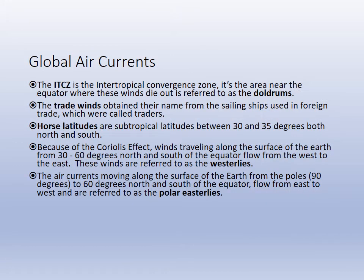Looking at the wind currents: the doldrums, or the intertropical convergence zone, have very little wind but a lot of precipitation. The trade winds, which got their names from sailing ships, blow in the subtropical zones. At 30 to 35 degrees latitude is the high pressure belt called the horse latitudes, where descending air means less wind. Ships stalled out there because they were wind-powered, so they had to throw heavy things overboard — legend has it they tossed their horses overboard, giving the region its nickname.